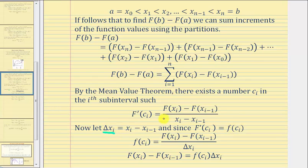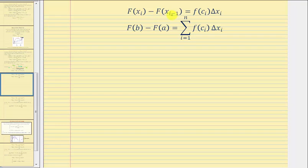So now we'll substitute delta x sub i for x sub i minus x sub i minus one, which gives us this equation here. And now if we multiply both sides by delta x sub i and flip the equation around, we would have big F of x sub i minus big F of x sub i minus one equals f of c sub i times delta x sub i. So this equation tells us this difference is equal to this product for each sub interval.